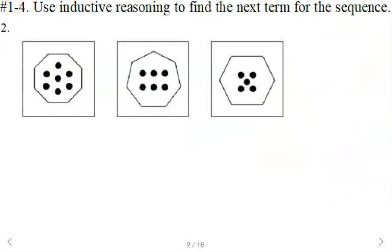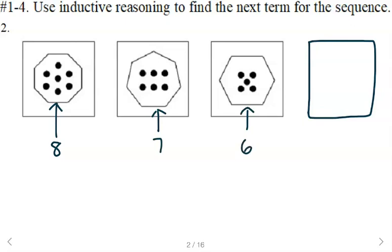All right, one thing I'm noticing on this one is that every term has a square to start with. So our next term is going to have a square. As far as the shape inside of it, we've got an octagon, eight sides here, seven sides here, six sides here. And so the next one's going to be a pentagon, and it looks like these are probably regular polygons.